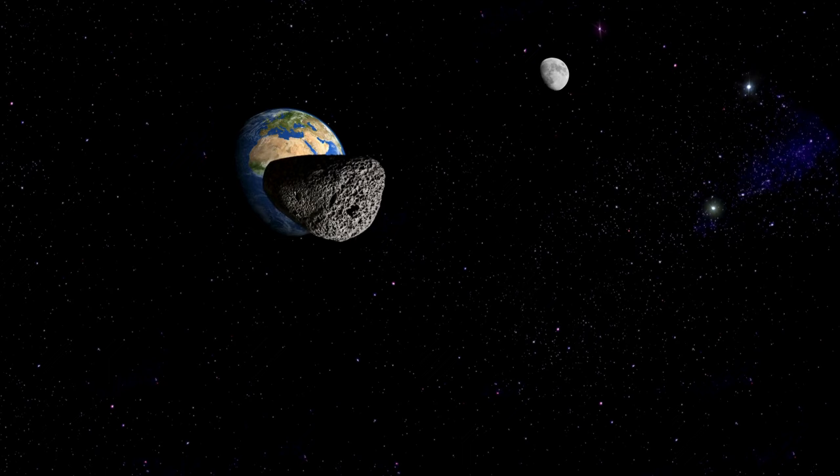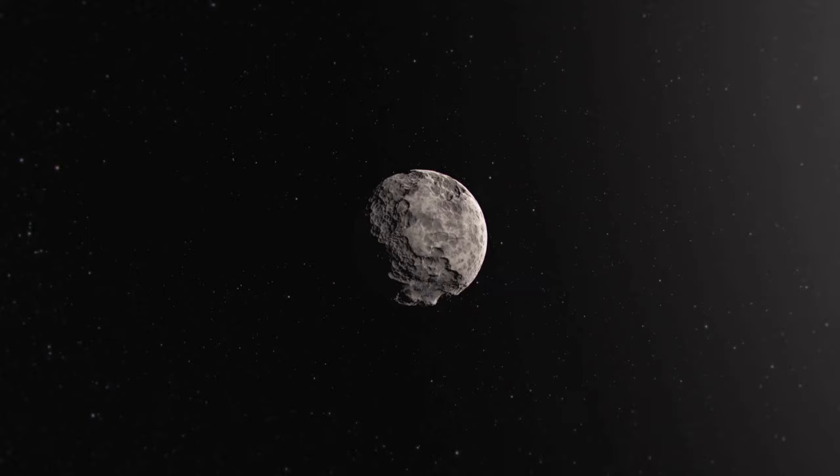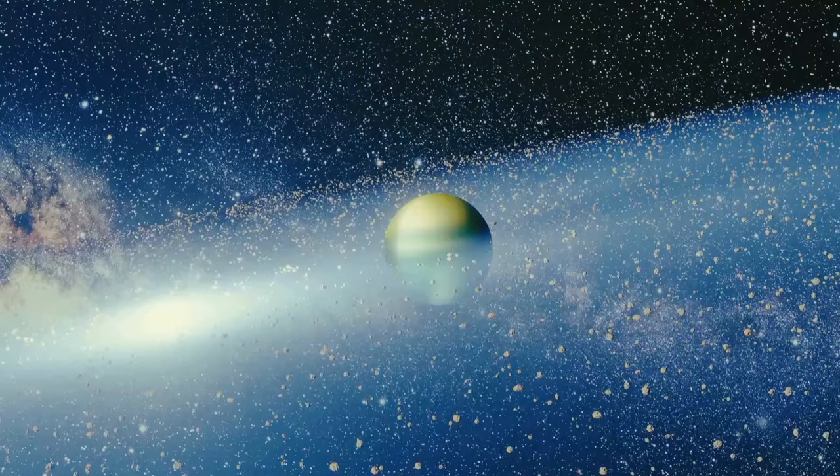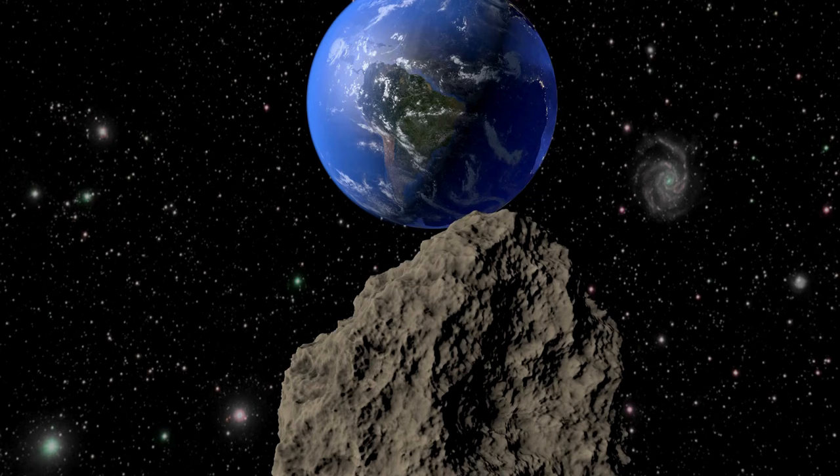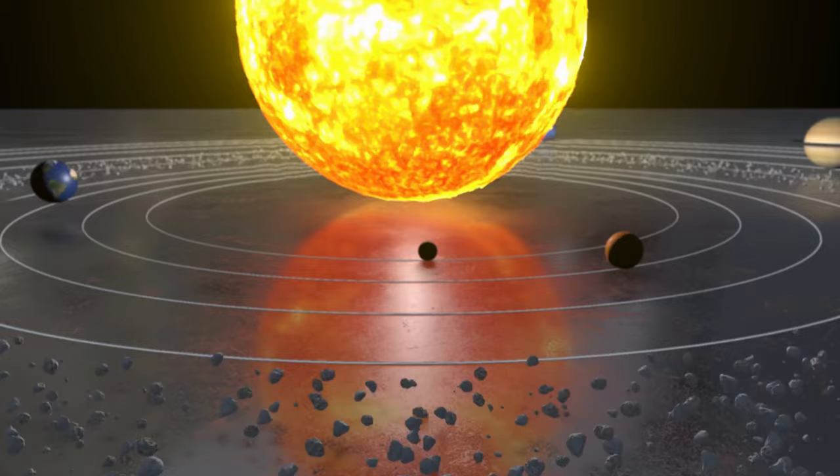The fragments of the comet hurtled toward the planet, creating anticipation among astronomers worldwide. Would the impacts be a spectacle or vanish without a trace? In July 1994, the world witnessed a remarkable event as fragments of comet Shoemaker-Levy 9 collided with Jupiter. Scientists part of NASA's near-Earth observation program remarked that it was an incredible encounter. Never had such an impact been seen or studied before. The impacts were nothing short of spectacular.